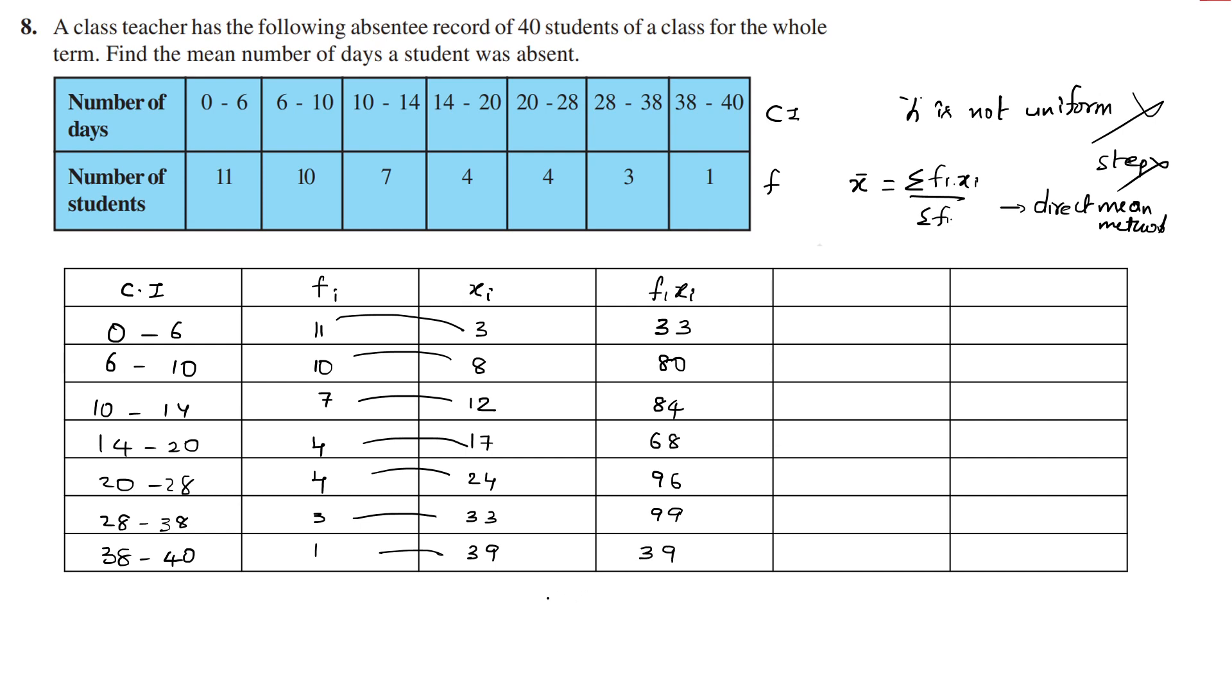Now calculating the summations. Sigma means summation. Adding the fi xi values: 33 plus 80 is 113, plus 84 is 197, plus 68 is 265, plus 96 is 361, plus 99 is 460, plus 39 is 499. So sigma fi xi equals 499. Adding the frequencies: 11 plus 10 is 21, plus 7 is 28, plus 4 is 32, plus 4 is 36, plus 3 is 39, plus 1 is 40. So sigma fi equals 40.